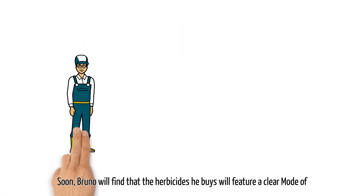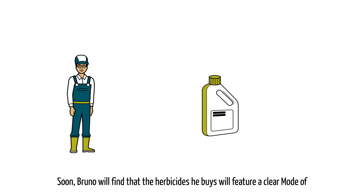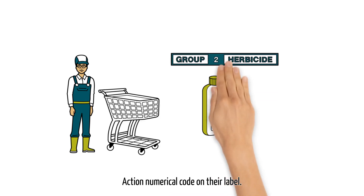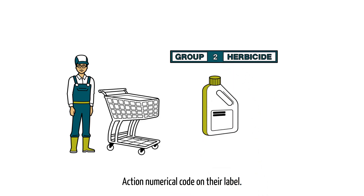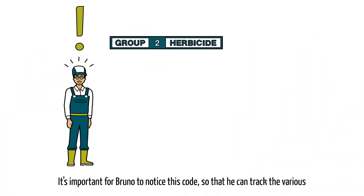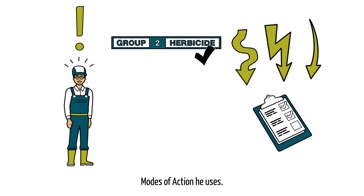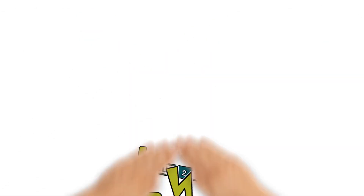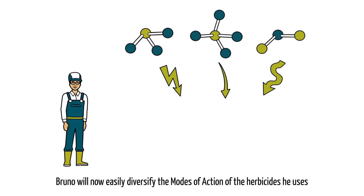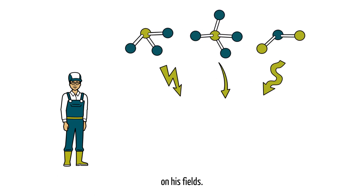Soon, Bruno will find that the herbicides he buys will feature a clear mode of action numerical code on their label. It's important for Bruno to notice this code so that he can track the various modes of action he uses. Bruno will now easily diversify the modes of action of the herbicides he uses on his fields.